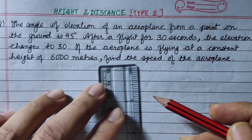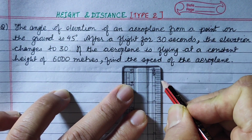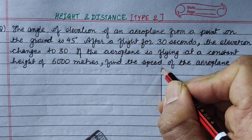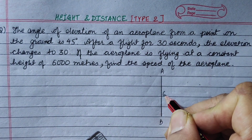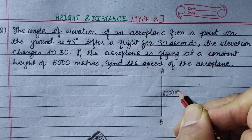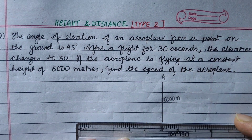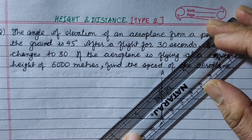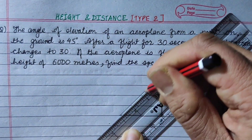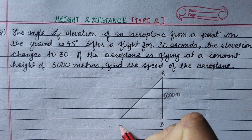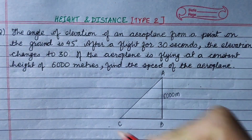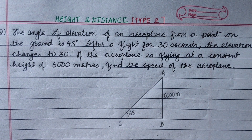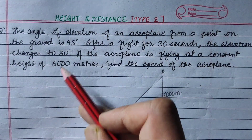Now, at the start the aeroplane is at a certain height. This is point A, this is B — this is 6,000 meters, this is a position. This is a point on the ground. Here is the angle of elevation — this is the line of sight. This is C, the point of observation. This angle of elevation is 45 degrees. The second angle of elevation is 30 degrees.